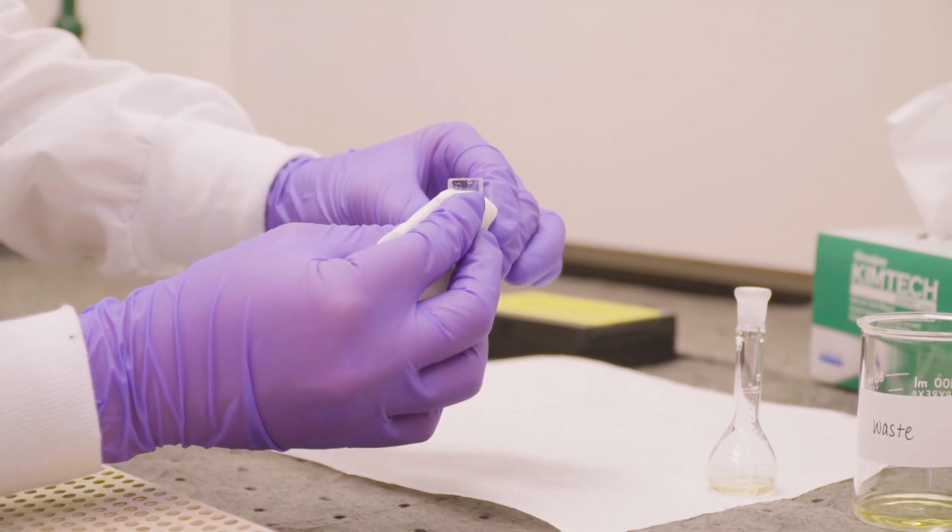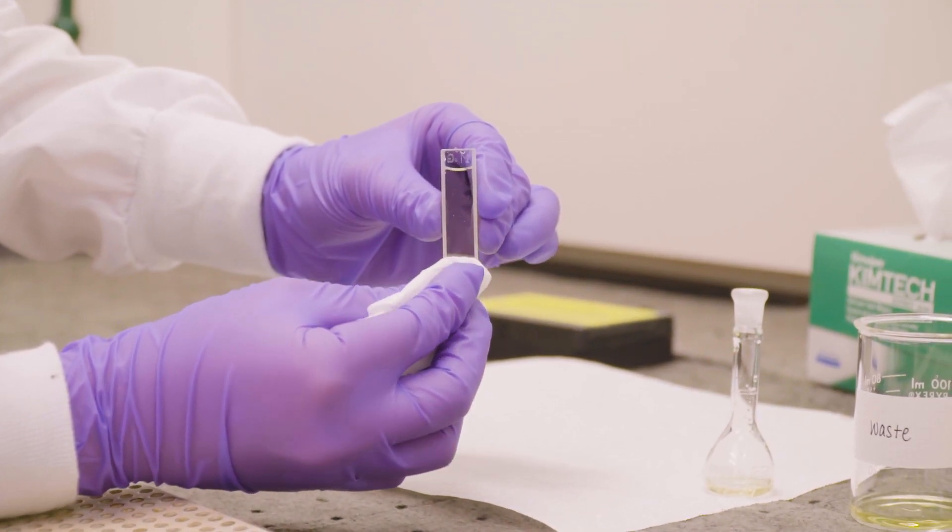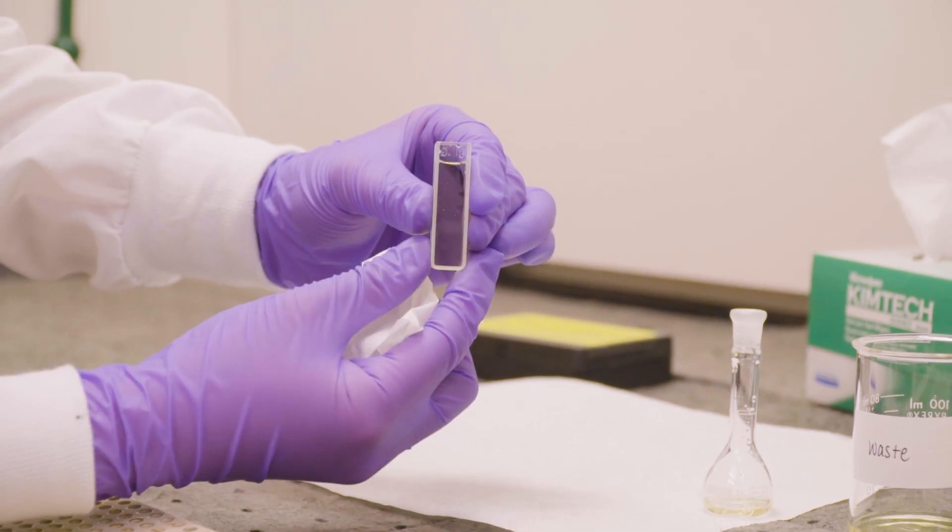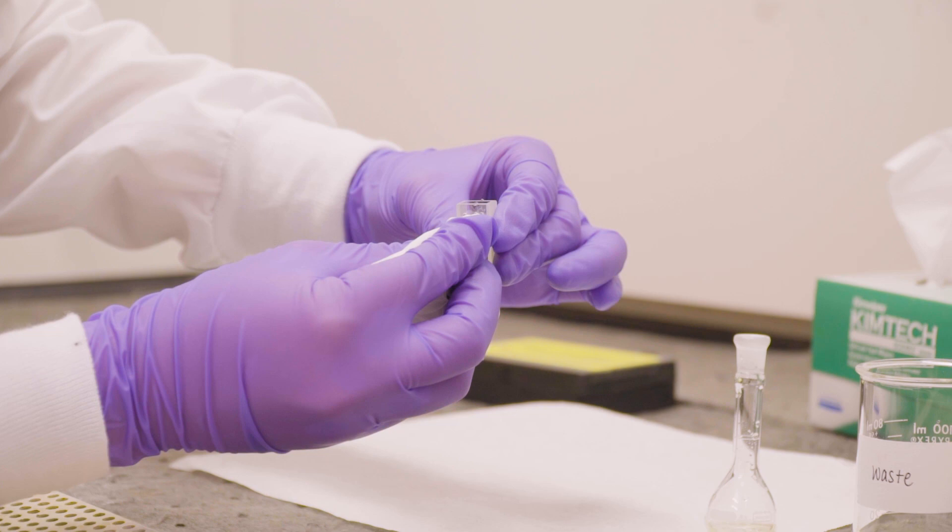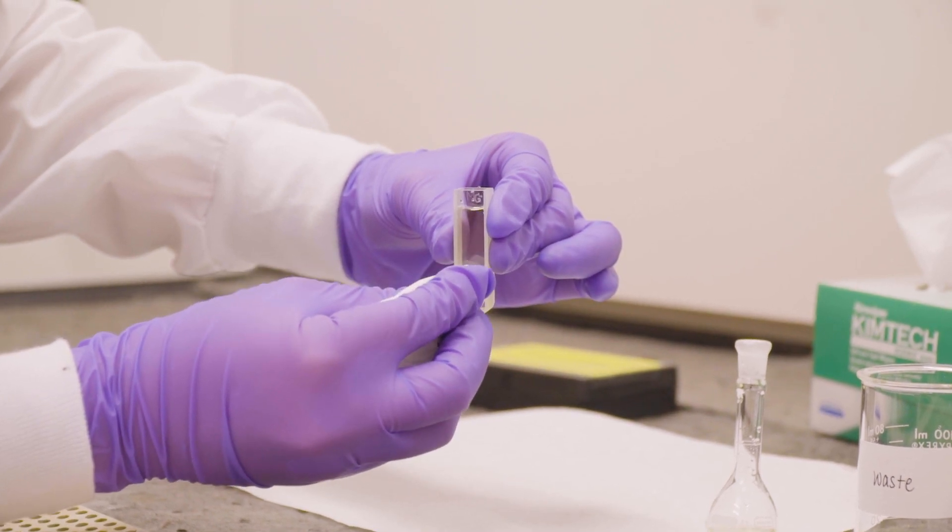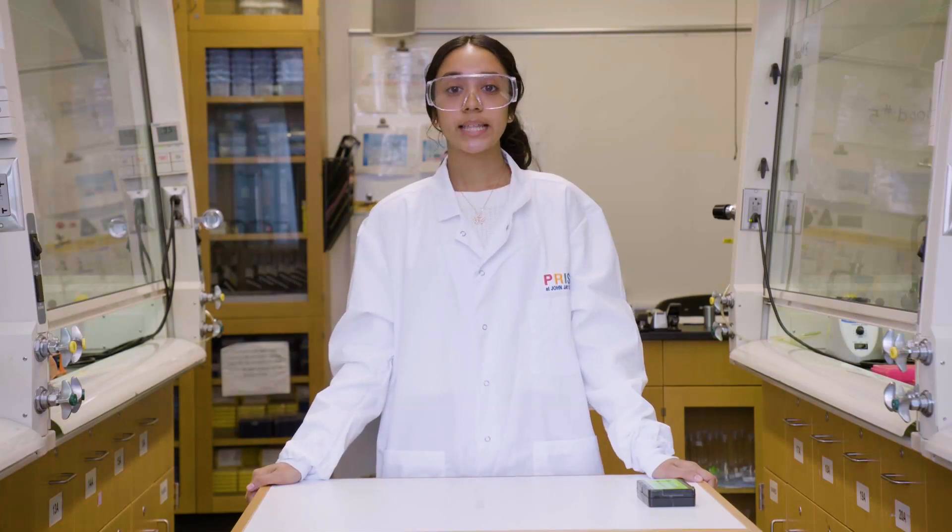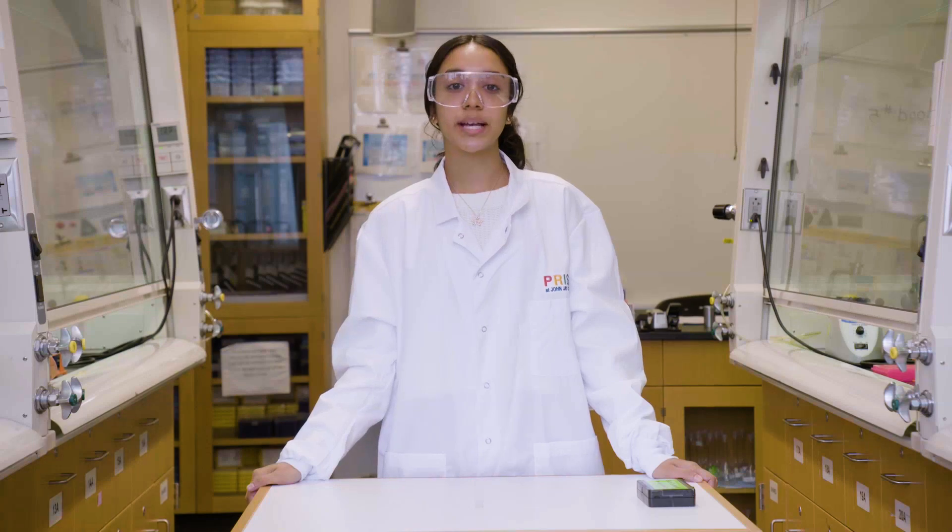If you do notice any fingerprints or droplets on the clear sides, gently clean them with a Kim wipe. Avoid using paper towels or any material that may scratch the surface. Now that the cuvette is clean, let's move on to proper usage during analysis.